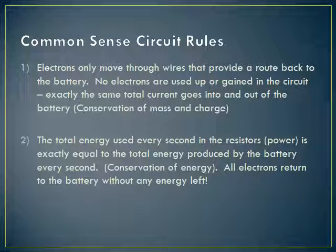The second common sense rule is that the total energy used up every second in the resistors is exactly equal to the total energy produced by the battery every second. This is a manifestation of conservation of energy. So if the electrons get 20 joules of energy every second from the battery, they're using 20 joules every second at the resistors, so that when they return to the battery, they have none. You've got to spend all your energy before you come back home.